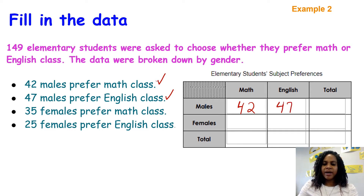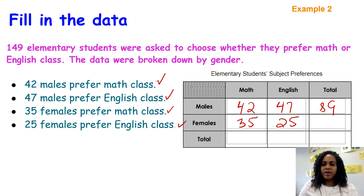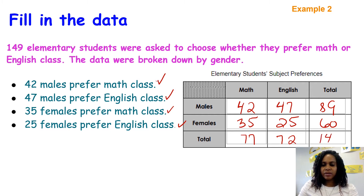Adding 42 plus 47 gives us 89 total males. Next, we have 35 females that prefer math and 25 females that prefer English. Adding 25 plus 35 gives us 60 total females. Then we add males and females that like math: 42 plus 35 is 77. Males and females that like English total 72, and 89 plus 60 gives us the grand total.